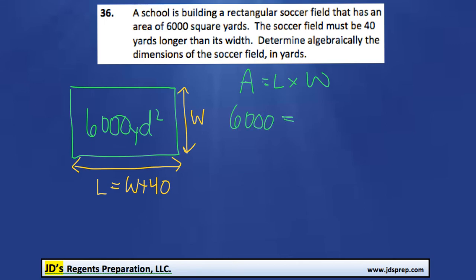The length, well now we're going to write the length as W plus 40. And we're going to do that so that we're dealing with an equation with only one unknown variable. And then we're going to multiply that by W, the width. But I'm actually going to write that in the front here.